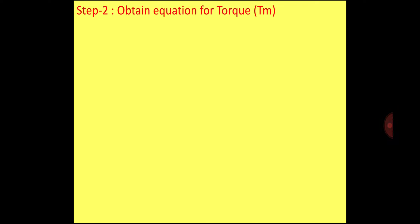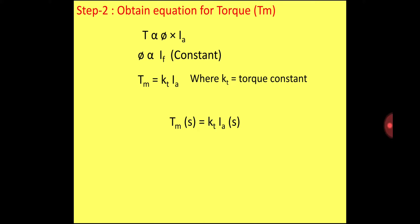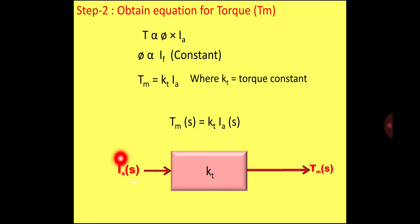In step two, we obtain the equation for torque Tm. The torque of a DC motor is directly proportional to the product of flux and armature current. In armature controlled DC servomotor, the flux is constant because the field current is constant. Therefore torque is directly proportional to IA, and we introduce the torque constant KT. So: Tm(S) = KT · IA(S). In the block diagram, IA(S) is input, KT is the block, and Tm(S) is the output.